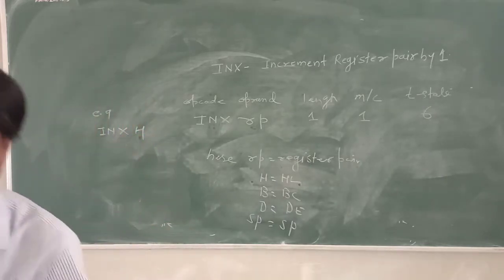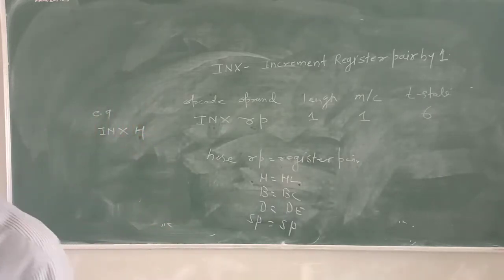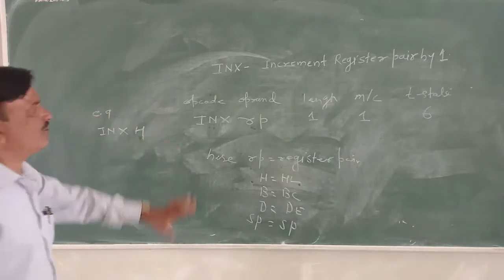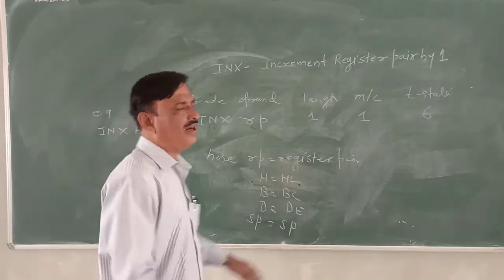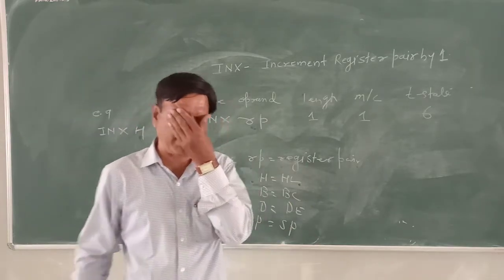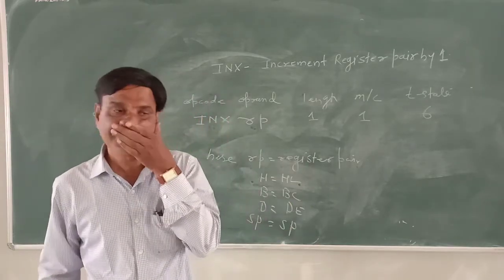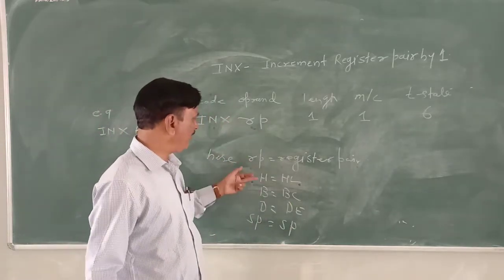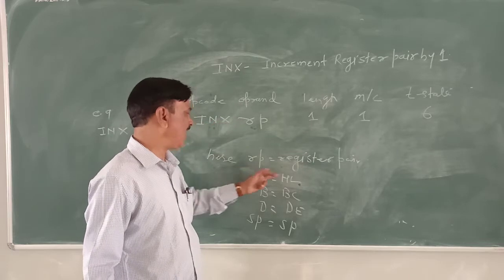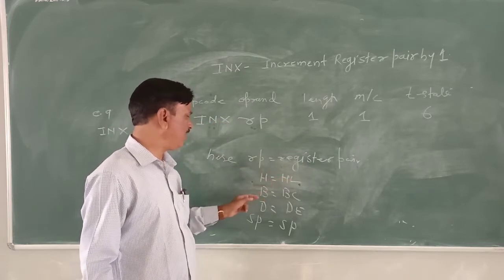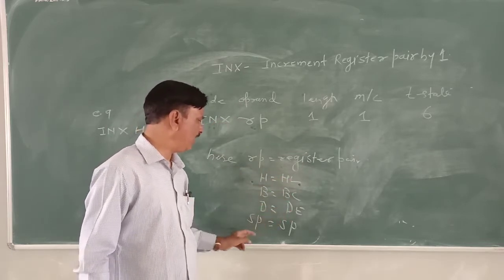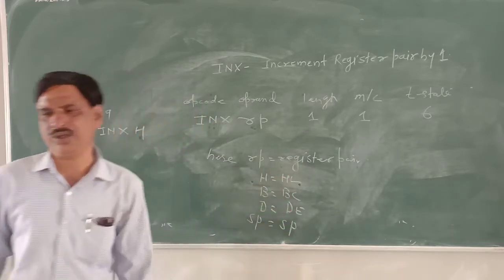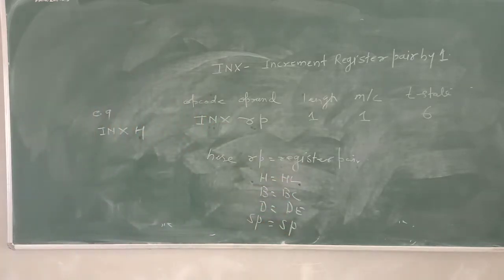Now you see the instruction: INX increments the register pair by one. The register pair can be H for HL, B for BC, D for DE, and SP for SP. This is the INX instruction.